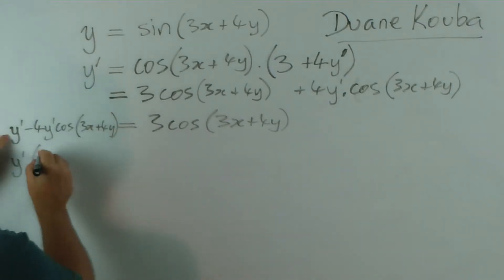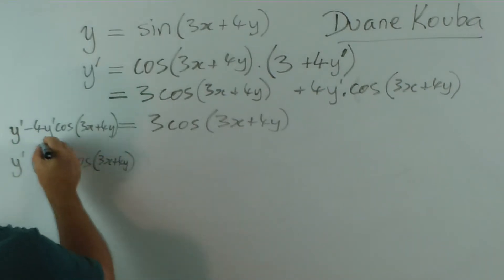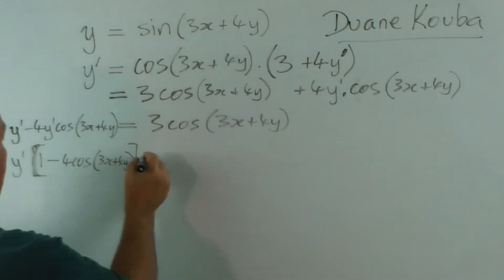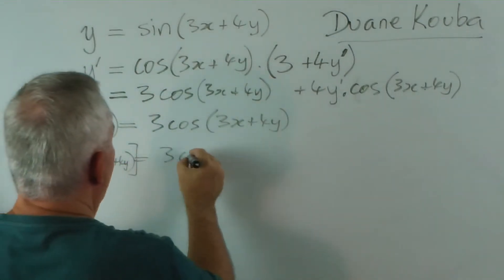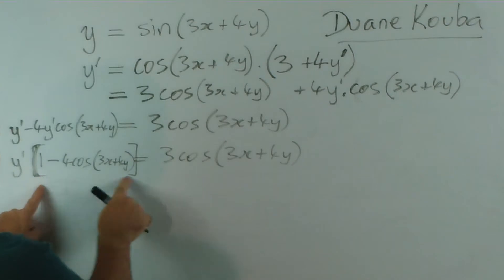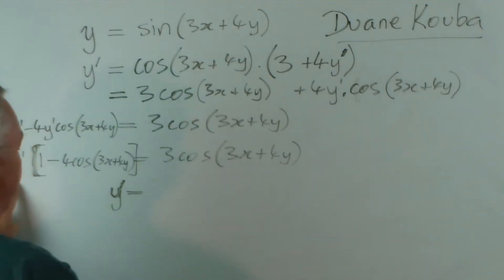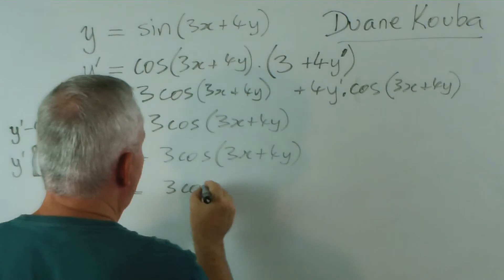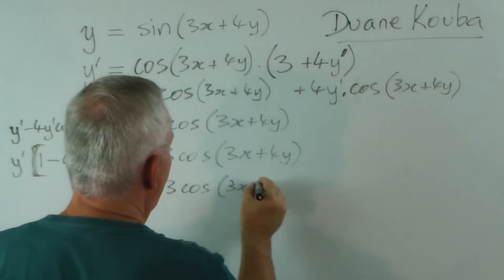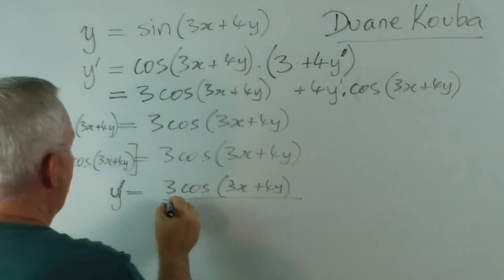We've got y dash times 1 minus 4 cos 3x plus 4y. And now I divide by this whole expression and I'm left with y dash. y dash equals this divided by this, 1 minus.